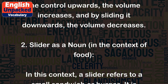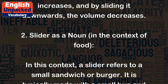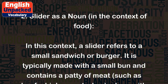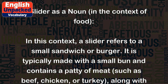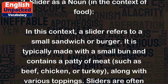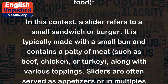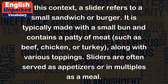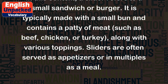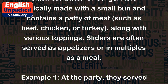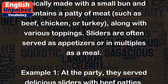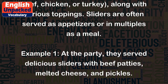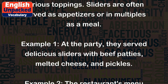2. Slider as a noun. In the context of food, a slider refers to a small sandwich or burger. It is typically made with a small bun and contains a patty of meat, such as beef, chicken, or turkey, along with various toppings. Sliders are often served as appetizers or in multiples as a meal.